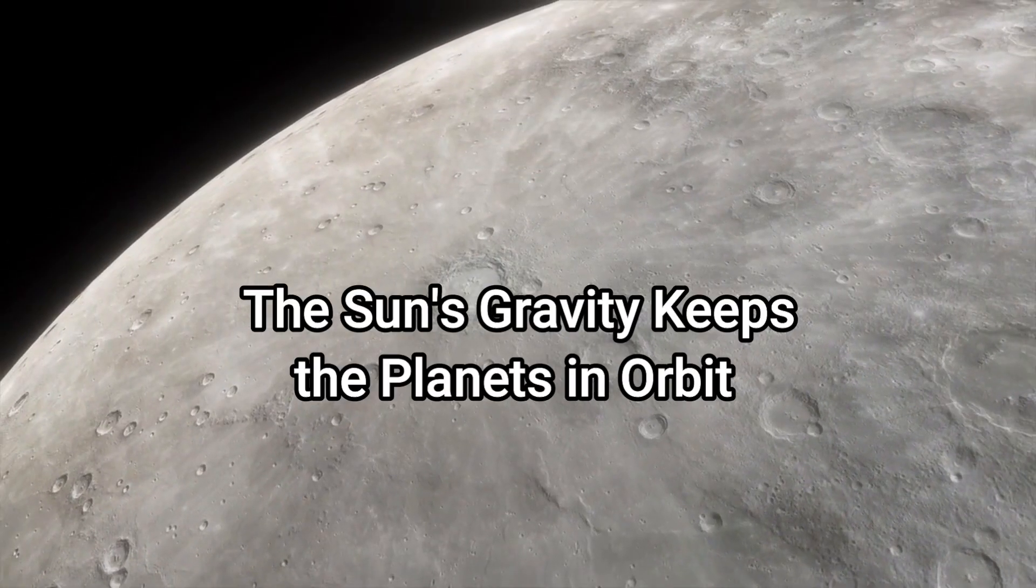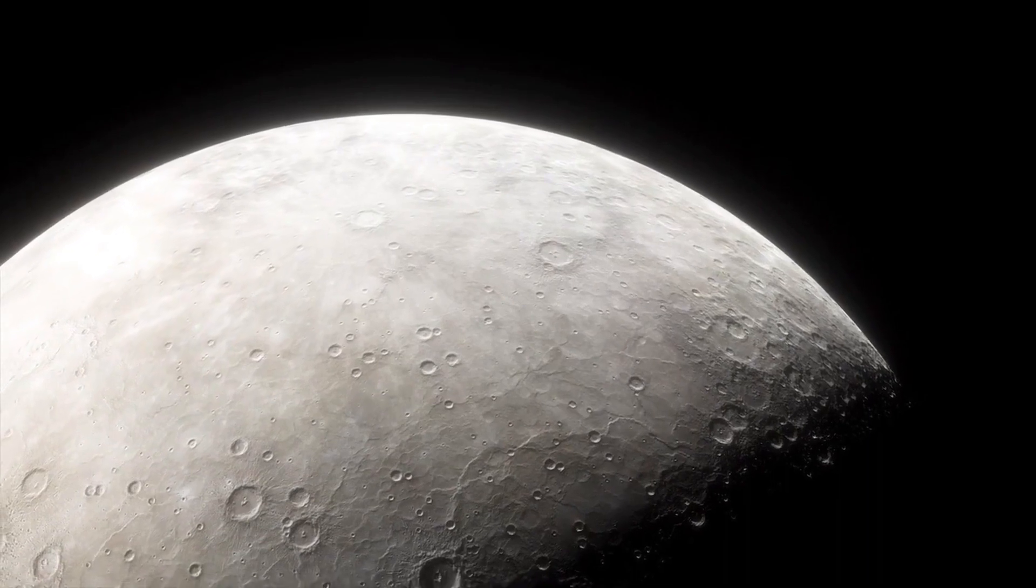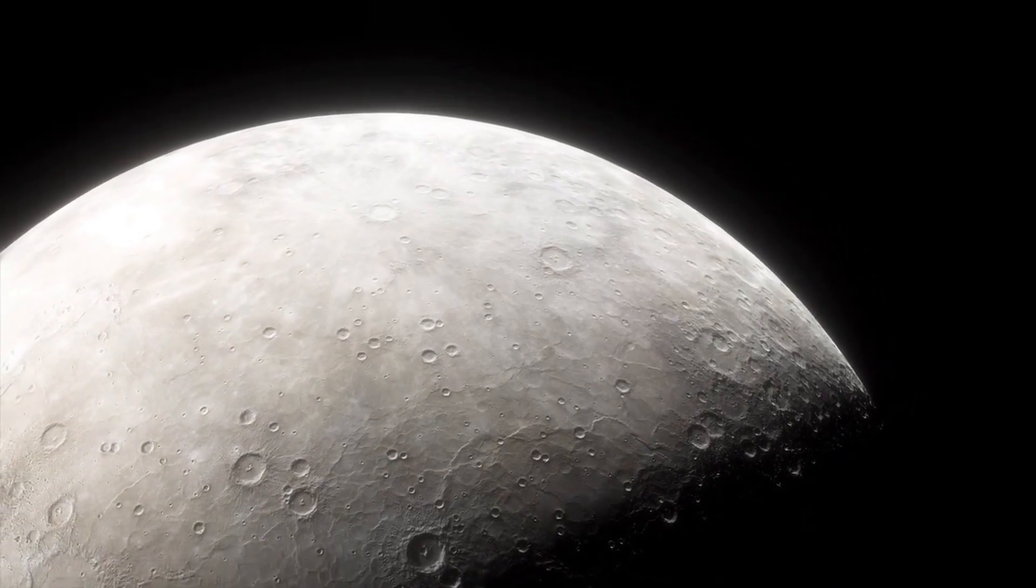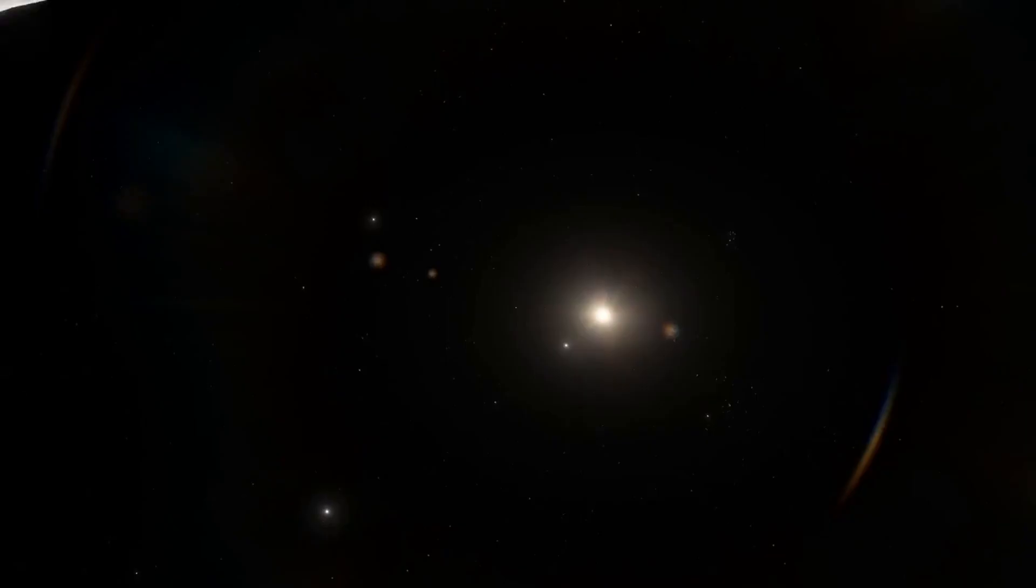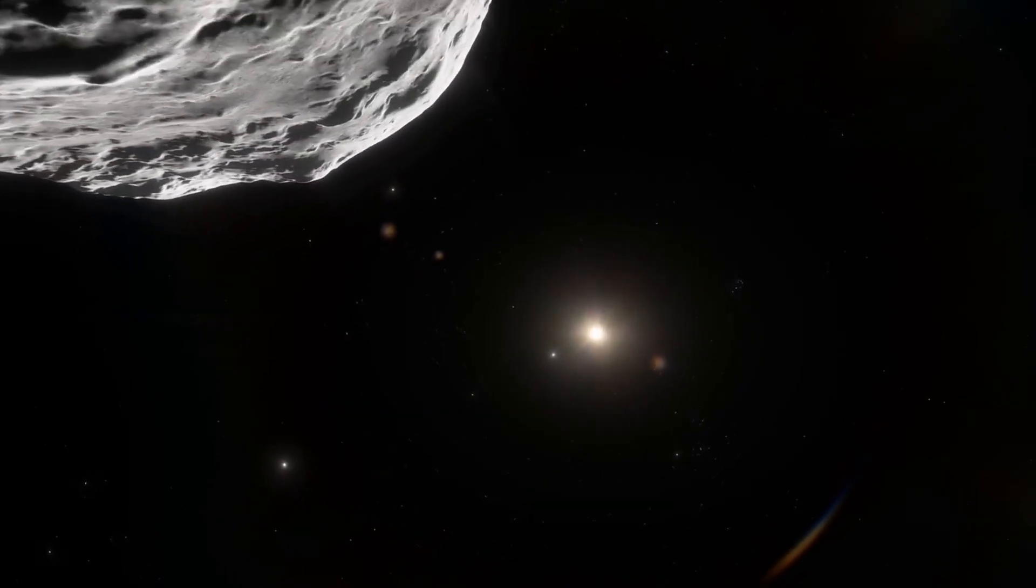Fact number eight, the sun's gravity keeps the planets in orbit. The sun's massive gravity is what keeps all the planets in our solar system in their orbits. Without the sun's gravity, the planets would fly off into space and drift away.